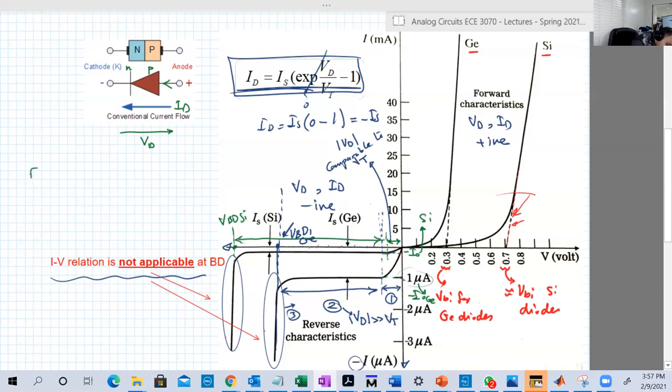In forward, ID and VD should both be positive. In reverse, ID and VD should both be negative. If you are working in reverse and ID is positive, then you have something wrong. All the time, the direction of the current is in that way, from P to N, and the direction of the voltage is from N to P. This is the symbol for the junction.